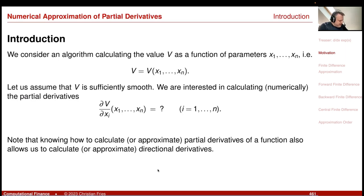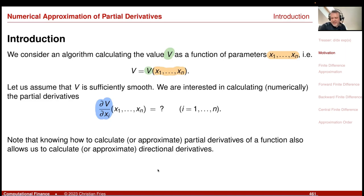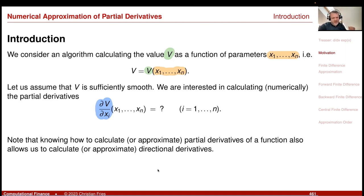So I have an algorithm here, a function v — for example, my financial product. This function takes some arguments x₁ to xₙ. I have v of these arguments, and I'm interested in the partial derivative of my function v with respect to arguments x₁ through xₙ, and I'd like to approximate this numerically. The function v could be anything — even a huge black box such as a Monte Carlo simulation.